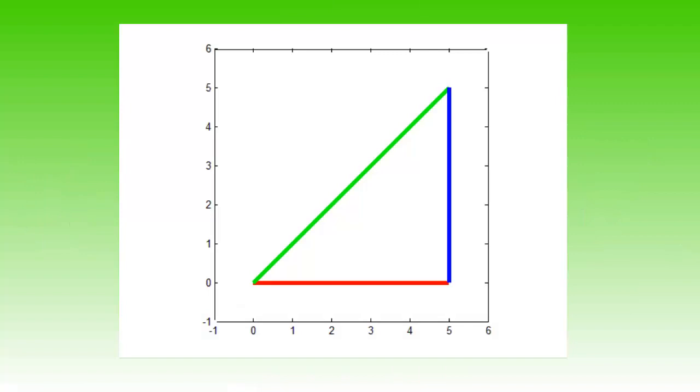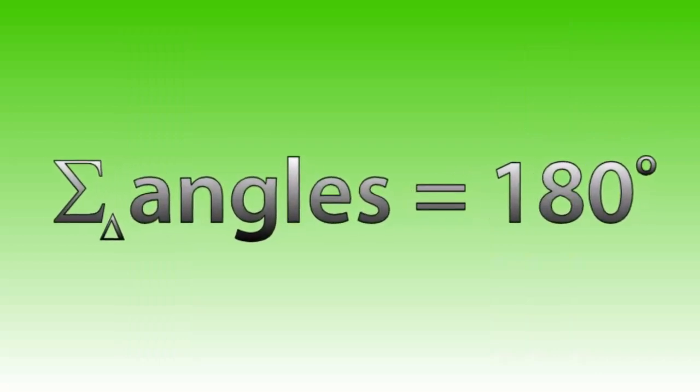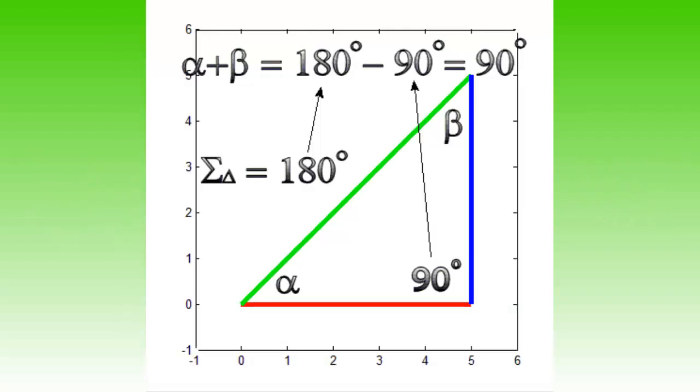A right triangle is a triangle with a 90 degree angle. Armed with the knowledge that the sum of the three angles is 180 degrees, that means that the two remaining angles sum up to 90 degrees. This in turn means that if we know one of the remaining two angles, we know the other one as well.